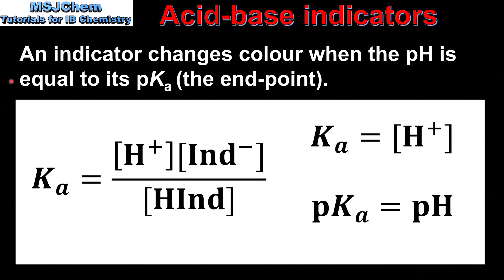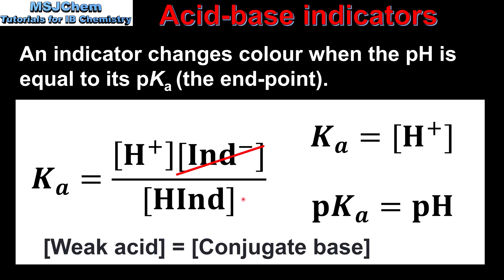To end the video, we look at the point at which an indicator changes color. This occurs when the pH of the solution is equal to the pKa of the Acid Base Indicator, and this point is known as the end point of the indicator. When an Acid Base Indicator is in the middle of its color change, the concentrations of IND⁻ and HIND are equal and cancel out, leaving Ka equal to the concentration of hydrogen ions. Taking the negative log of both sides gives pKa equal to pH, which is the end point.